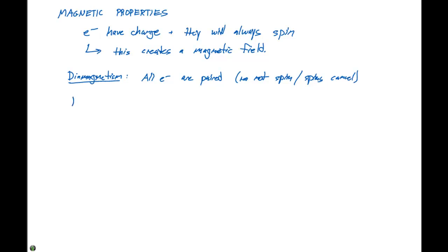And there's paramagnetism, which means we have a species that contains unpaired electrons. So there's a net spin involved when we're looking at our atom or our molecule.